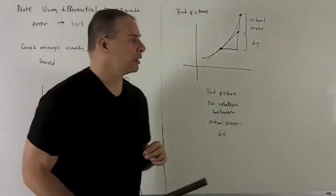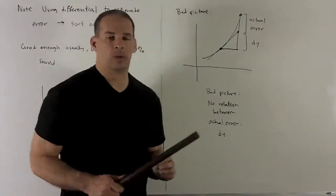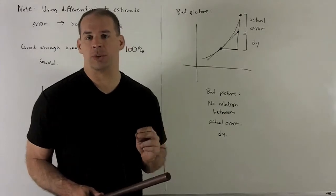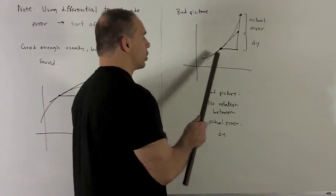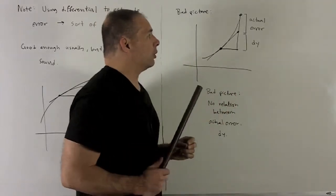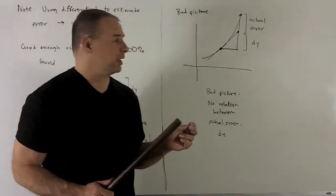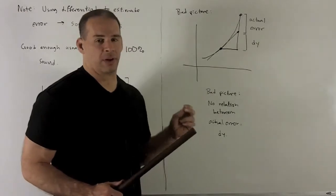On the other hand, we have this picture, which looks like our picture for x cubed at the beginning. If you notice, say we're increasing and concave up, we draw on the tangent line, and then you note there's no apparent relation between the actual error and the differential.